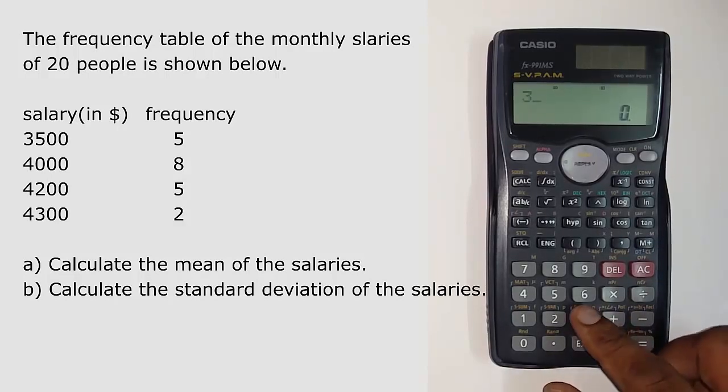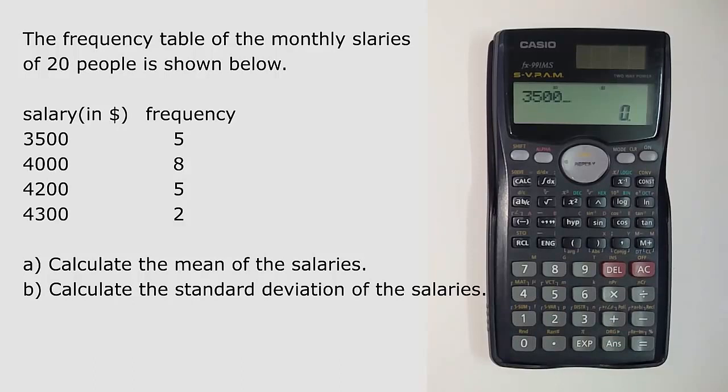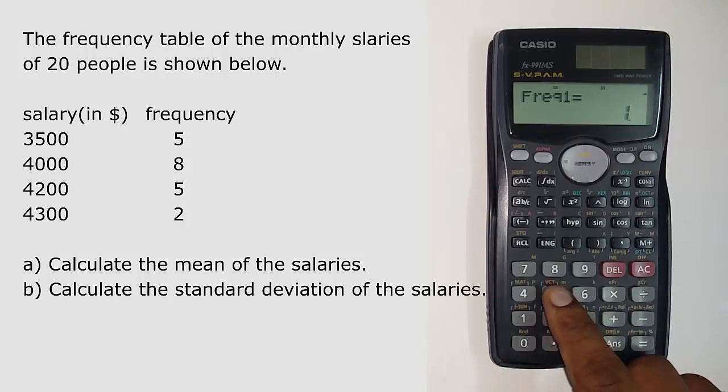Type in the number 3500. Then click the M plus button. Then click the up arrow. This will ask for its corresponding frequency which in this case is 5. Input the number 5. Click on equal to sign.